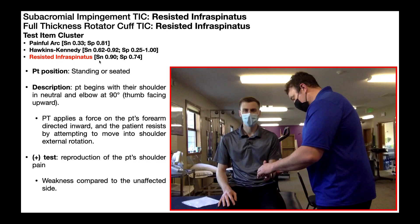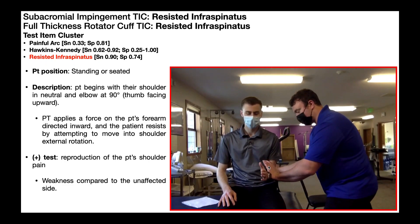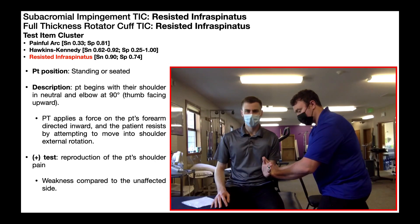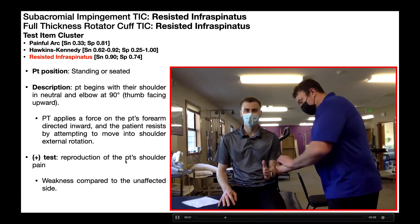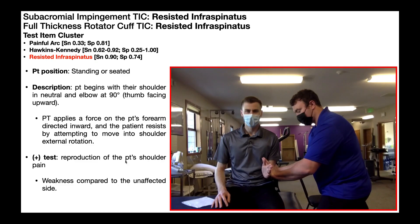So if we do a resisted infraspinatus test and the result is negative, that means there's a 90% chance that they do not have subacromial impingement syndrome or a full thickness rotator cuff tear. The way you perform this test is identical to the manual muscle test because it is a manual muscle test. You can have the patient in standing or seated — I prefer seated. The patient begins with their shoulder in neutral, meaning arm and elbow by the side, with the elbow bent to 90 degrees and thumb facing up. I apply a force on their forearm pushing inward, and they resist by attempting to move the shoulder into external rotation. A positive test is reproduction of the patient's familiar shoulder pain, and we'll probably also see weakness on that side compared to the unaffected side.